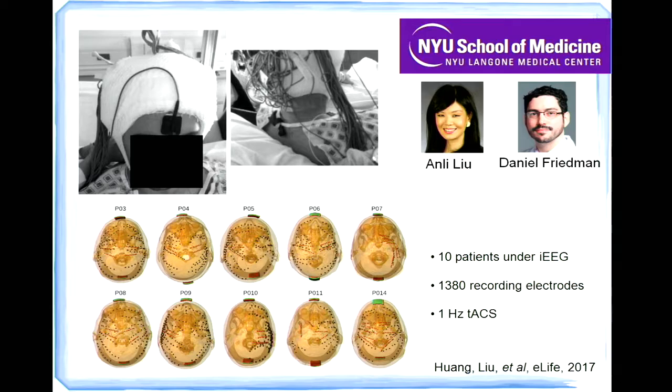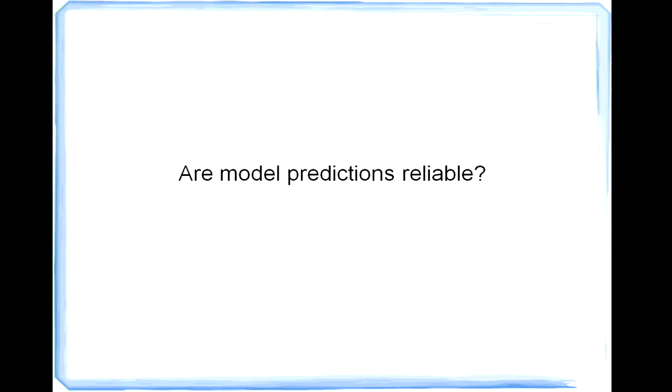And thanks to Dr. Annie Liu and her team at NYU School of Medicine. So we have access to almost 10 epilepsy patients under the intracranial EEG monitoring. And each one of these patients have over 100 intracranial electrodes implanted. So we carried out one hertz transcranial alternating current stimulation on these patients. And we also built very high detailed computation models for all these subjects. And then once, after we got the recordings, we can compare recordings to our models. And we can answer the first question. We've been wondering, are these model predictions reliable?